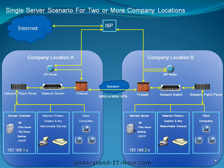The second scenario is a single server with two or more company locations. Having a secondary location requires a few additional pieces of hardware: a second internet service provider connection, an ISP router, a secondary firewall which allows you to connect to the primary location via WAN VPN, a secondary network switch, a patch panel, and networkable devices such as client computers and printers.